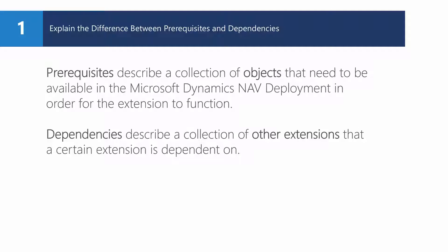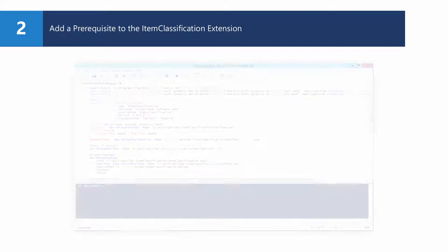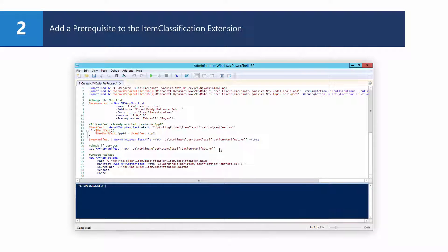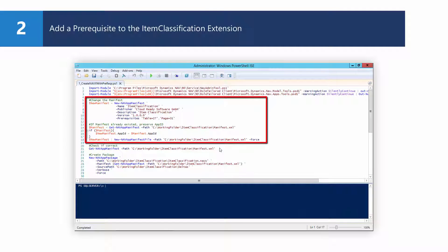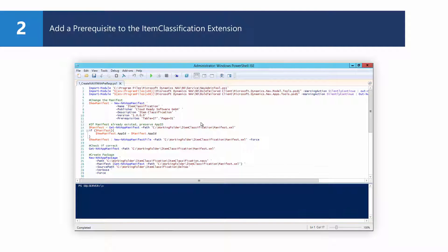Let's focus on prerequisites and change the extension created in the 'How do I build a basic Microsoft Dynamics NAV extension' video by adding a prerequisite to the item table. This is done in the manifest. We already have a manifest, and we don't want to change the app ID, so we check if the manifest already existed and preserve the app ID if it did. When creating the manifest, you can see we added one parameter — prerequisites — to describe the prerequisites of this extension.